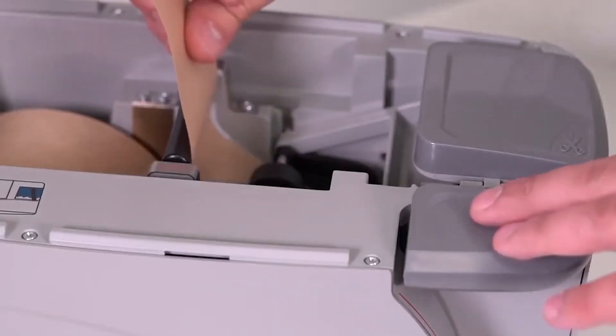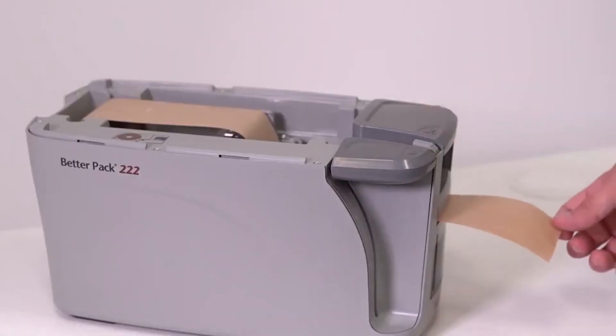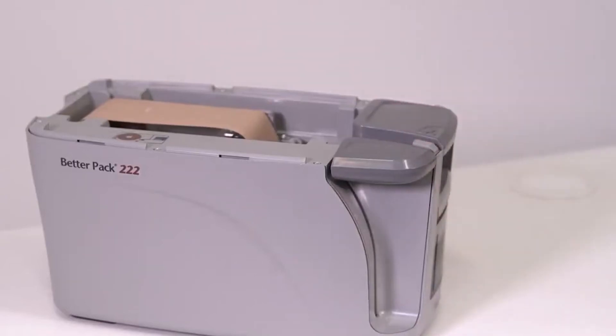Feed the tape under the roller, push down on the feed lever and press down on the cutter to cut the tape off. Finally, put the lid back on.